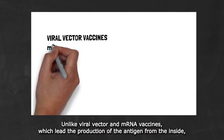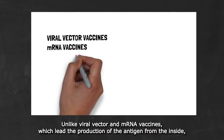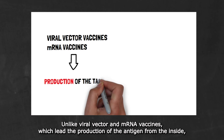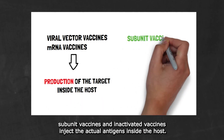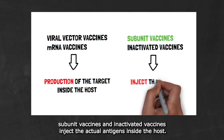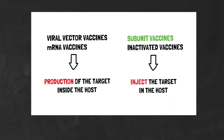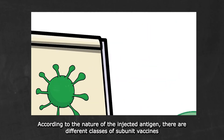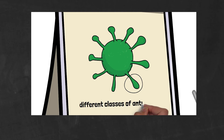Unlike viral vector and mRNA vaccines, which lead the production of the antigen from the inside, subunit vaccines and inactivated vaccines inject the actual antigen inside the host. According to the nature of the injected antigen, there are different classes of subunit vaccines.